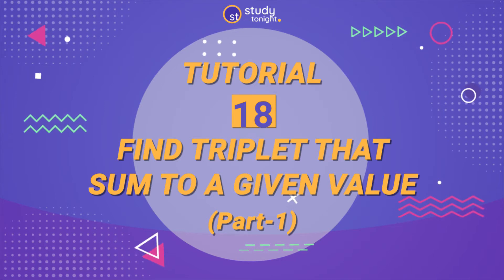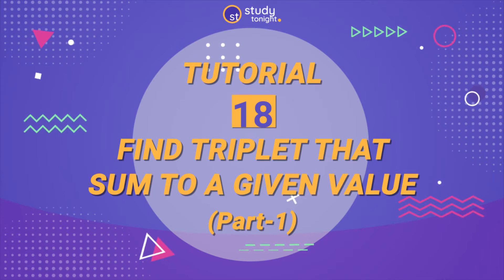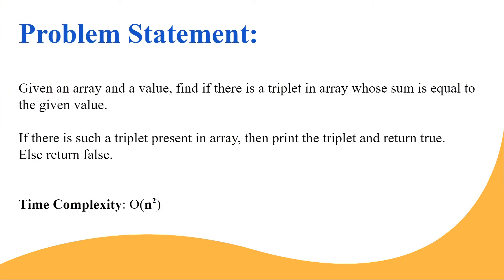Hello everyone, welcome to this tutorial in which we are going to discuss a very famous problem called 'find triplet that sums to a given value.' This is part one of the video discussing the simplest approach. We are given an array and a value, and we need to find if there is a triplet in the array whose sum is equal to the given number. A triplet is a set of three numbers — if they sum to the given value we return true, otherwise we return false.